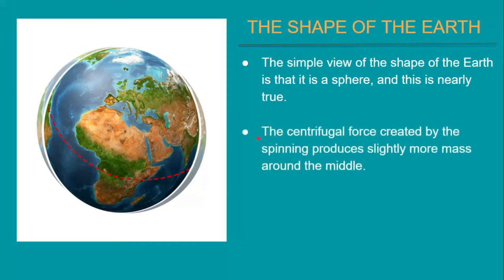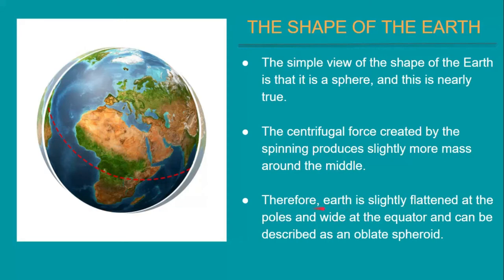The centrifugal force created by the spinning produces slightly more mass around the middle. Our earth spins, and by spinning, the centrifugal force produces slightly more mass around the middle of the earth. Therefore, earth is slightly flattened at the poles and wide at the equator, and can be described as an oblate spheroid.